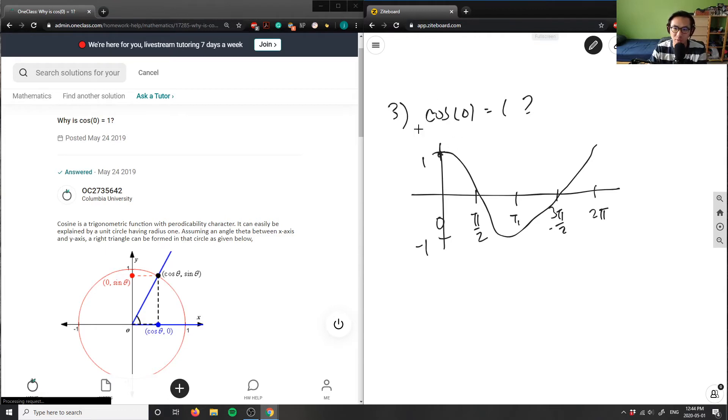It says, why is cos 0 equals 1? Well, the graph says so. Cosine of 0 here equals 1. This is a graph of y equals cos x.